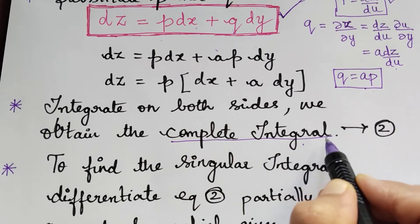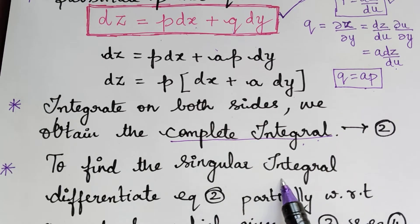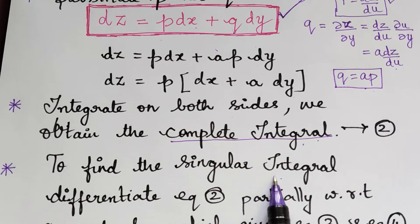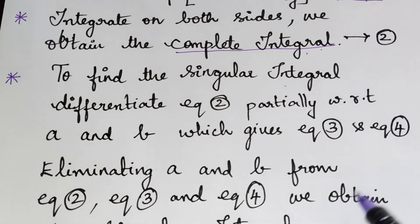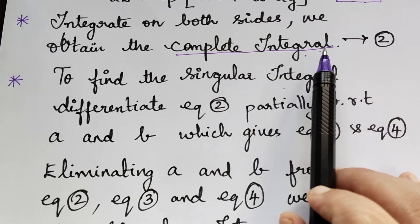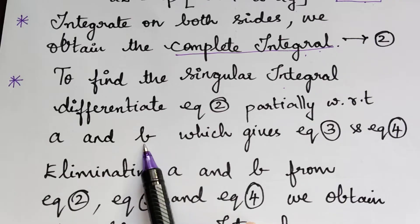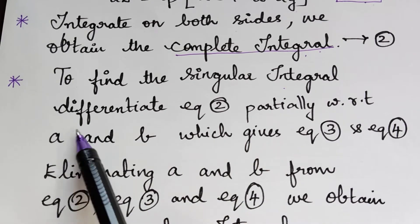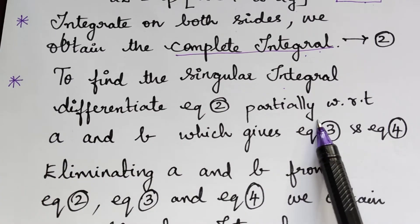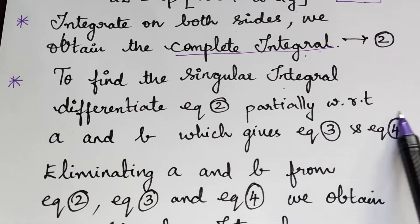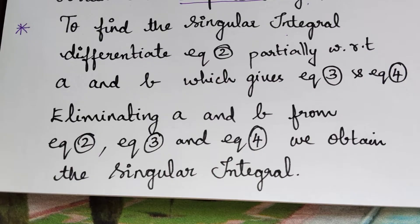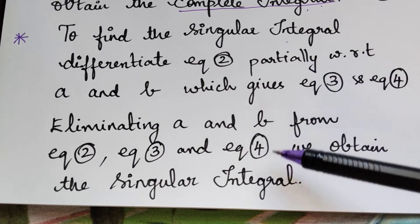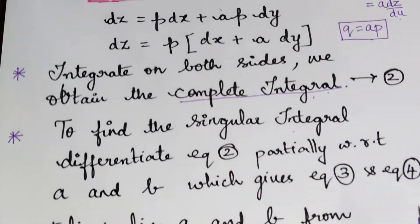If the question asks for the singular integral, proceed further. Mark the complete integral as equation 2. Differentiate equation 2 partially with respect to a to get equation 3, and with respect to b to get equation 4. From equations 2, 3, and 4, eliminate a and b by solving them, and you will obtain the singular integral. This is the method for solving type 2 problems of the standard types.